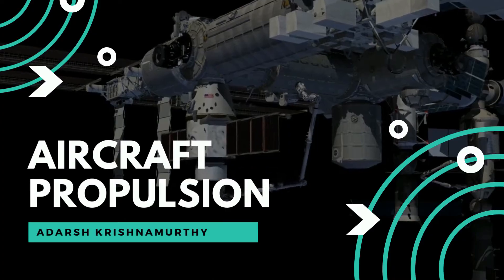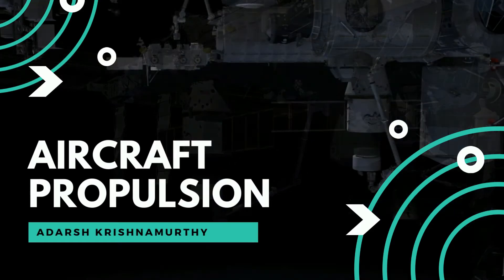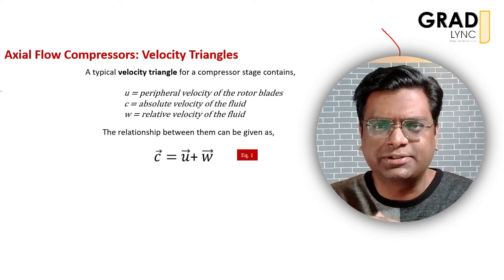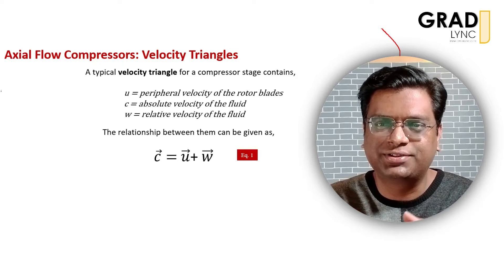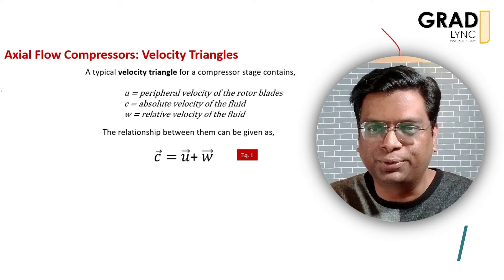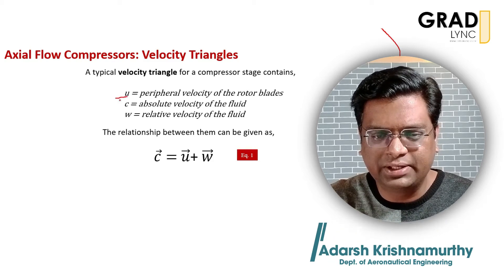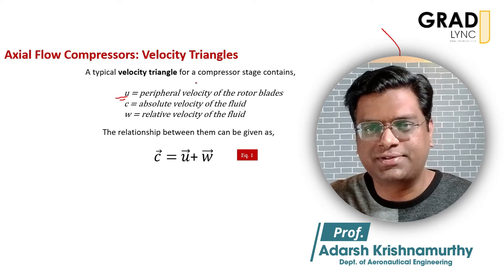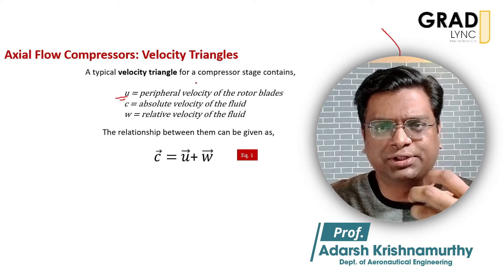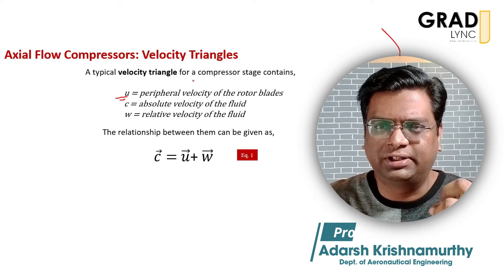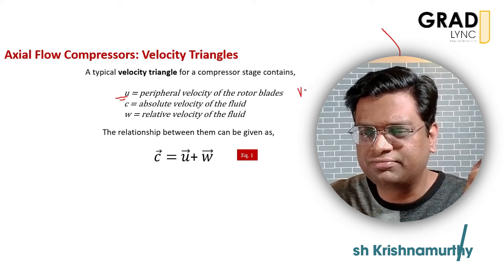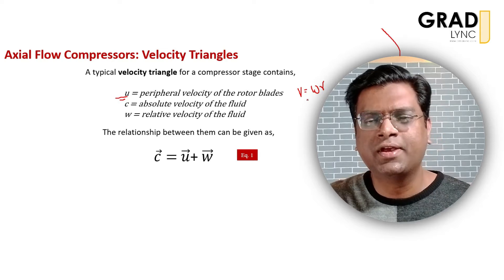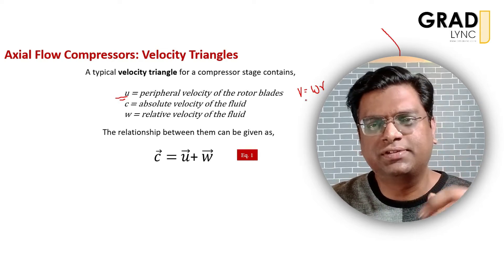Now we will go in depth into the velocity vectors and how we can represent them to understand the behavior of flow within the compressor. To define the velocity parameters in a compressor stage, we first understand the different velocities associated with the flow. The first parameter is the velocity of the blade itself. The blade rotates at a certain RPM — its peripheral velocity — and this rotational velocity can be converted into linear velocity using the relation v = ω × r, where v is the linear velocity and ω is the angular velocity.